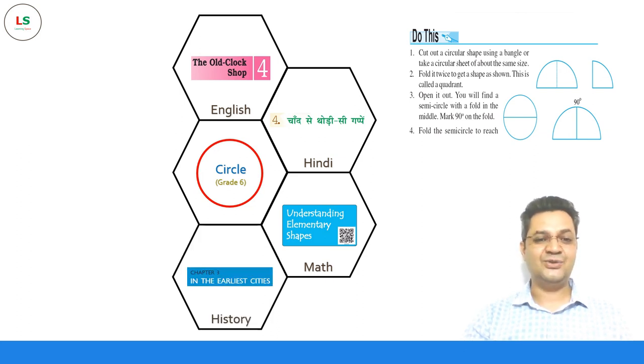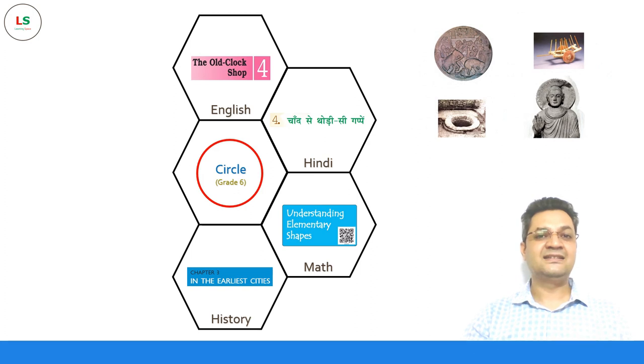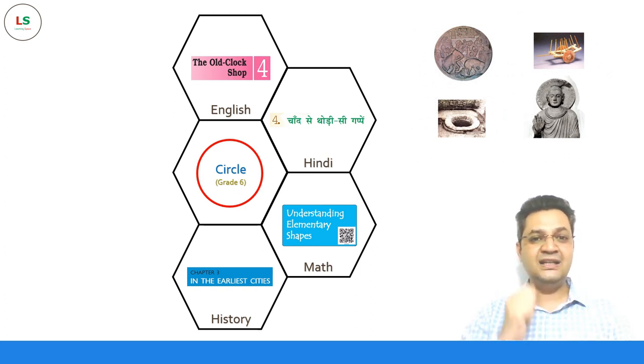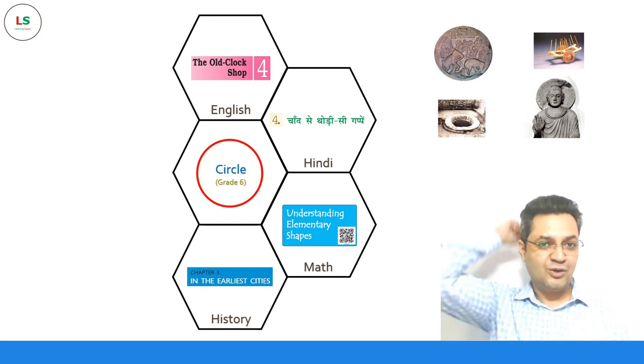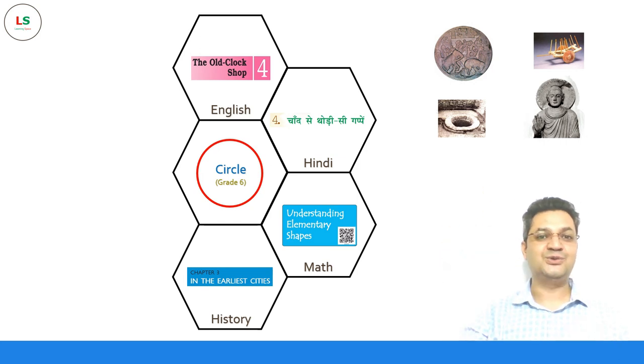In History, in the chapter on the earliest cities, there is a description of seals, coins, the wheel, the mouth of the well, and the halo around Gautam Buddha to show his enlightenment — all circular references.